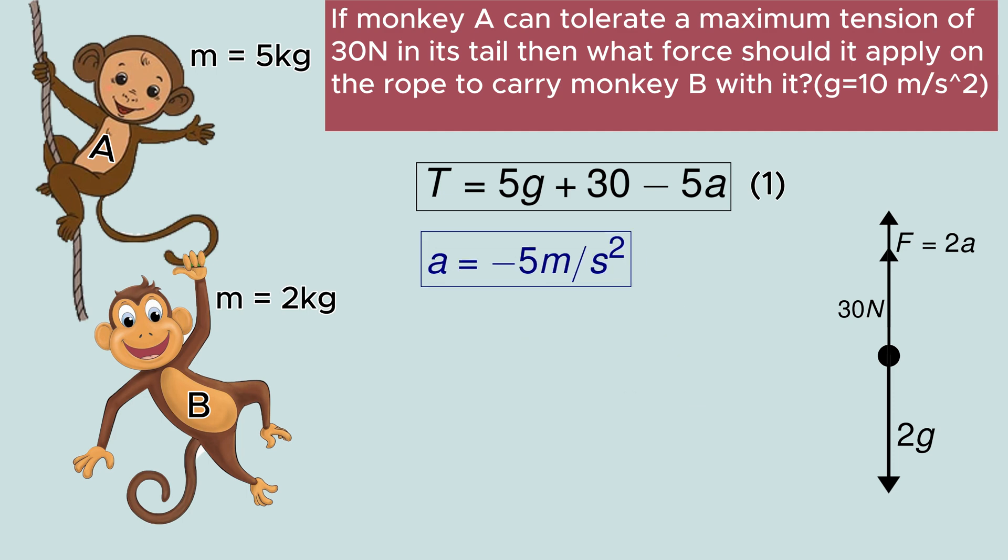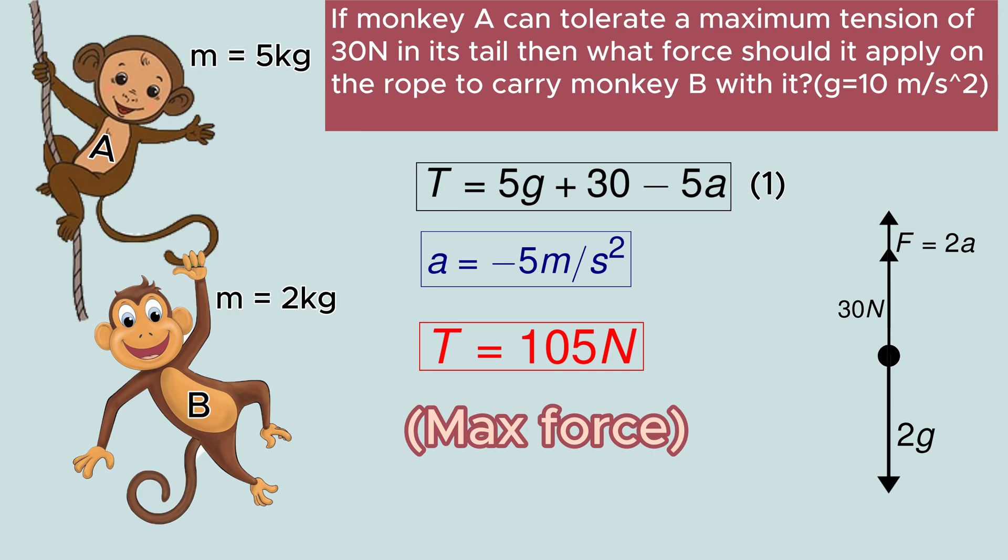Now if we substitute A equals minus 5 meters per second square in our equation 1, we can easily get tension as 105 newtons. This is the maximum force A has to apply in order to hold B with it.